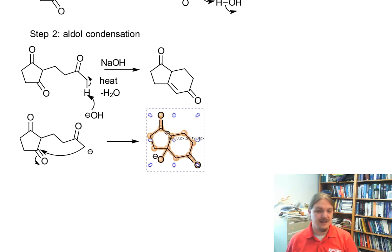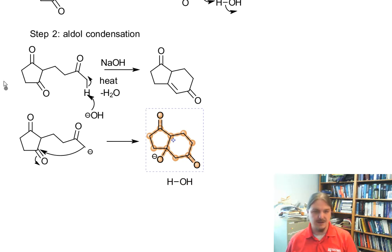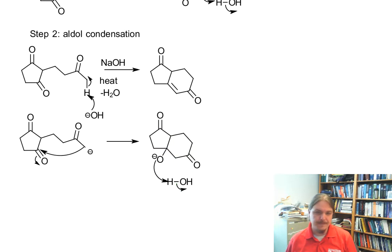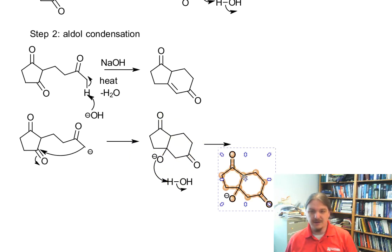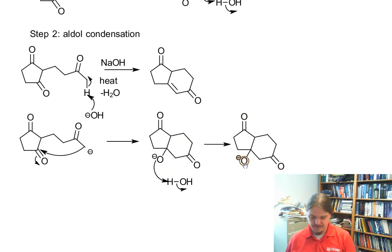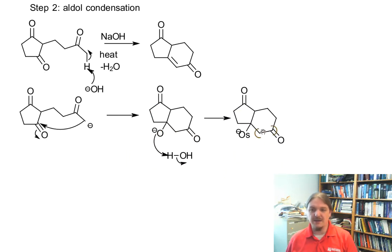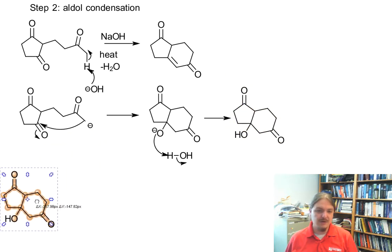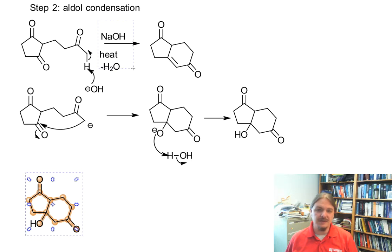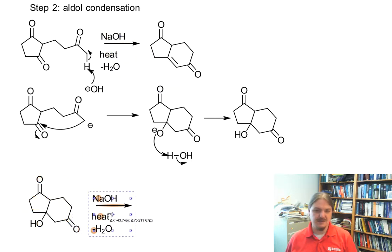We have this alkoxide anion intermediate, which is going to pick up a proton from water — we have water present, so something is available to provide a proton. We end up with the alcohol. And then, as we know, this alcohol can undergo an elimination reaction under these conditions.